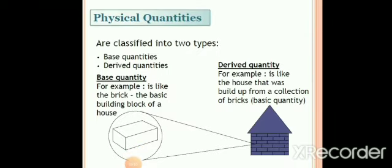Here is an example which helps us to distinguish between the base quantities or fundamental quantities and derived quantities. Base quantity is like the brick, that is the basic building block of a house, whereas derived quantity is like the house which is built from a collection of bricks.